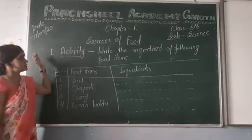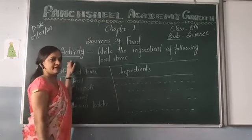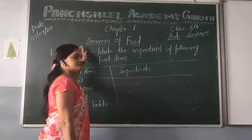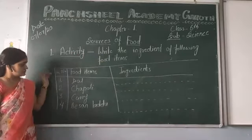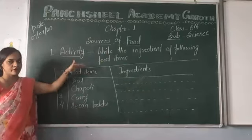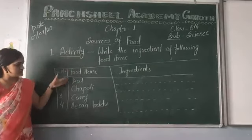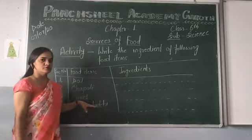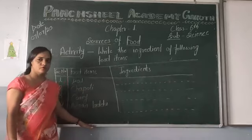In order to understand ingredients, you have to perform an activity. Activity one: write the ingredients of the following food items. In this table, the food items mentioned are dal, chapati, curry, and paisan ladhi. You have to write the ingredients of all these four food items.